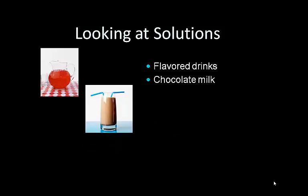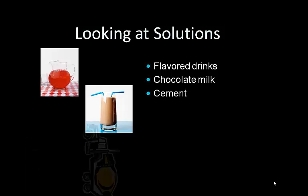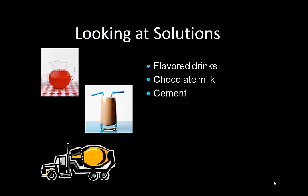Chocolate milk is another one — you put the chocolate syrup in, and your white milk turns brown because you added chocolate. And cement — you probably didn't think much about it because you can see the rocks in it, but you also have sand, water, and other chemicals that dissolve in the water when you make cement. So you don't always see it — you can have a mixture and a solution at the same time.